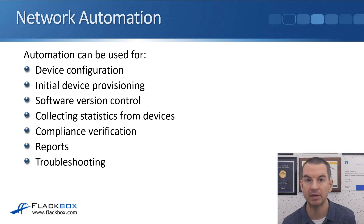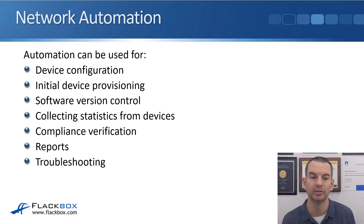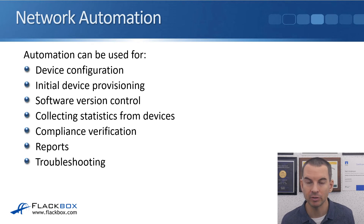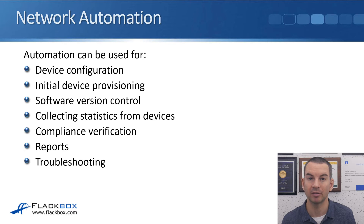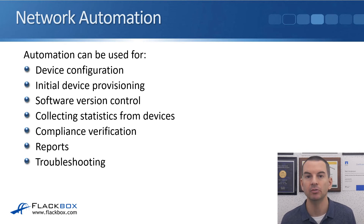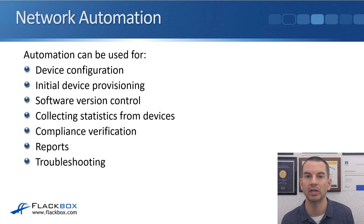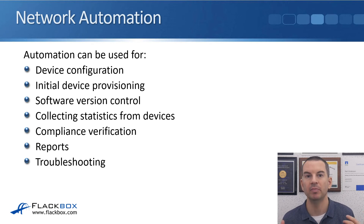Let's look at network automation and the benefits it can bring. Automation can be used for device configuration and initial device provisioning when it first comes from the factory. You can use it for software version control to make sure your devices are running the same software version. You can use it to collect statistics from devices and report on those, as well as for compliance verification — checking that a known good configuration is what's actually configured on the device. It can also be used for troubleshooting, because automation can provide an organization-wide view of the network, enabling system-wide troubleshooting rather than one device at a time.